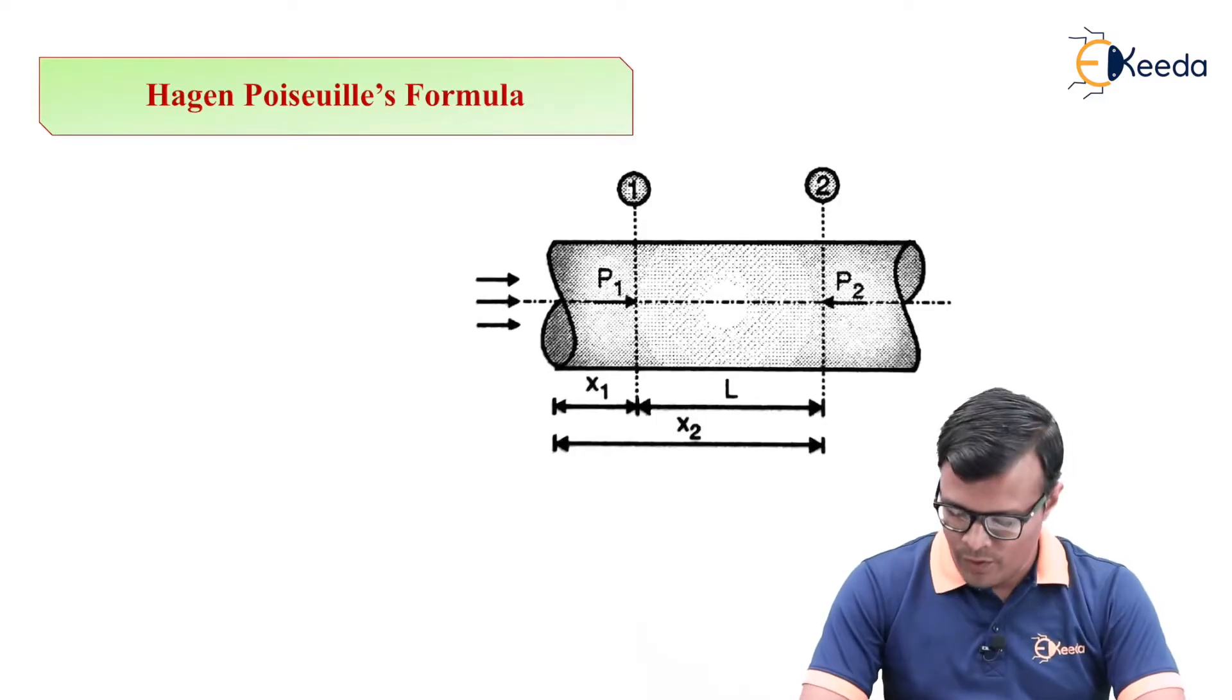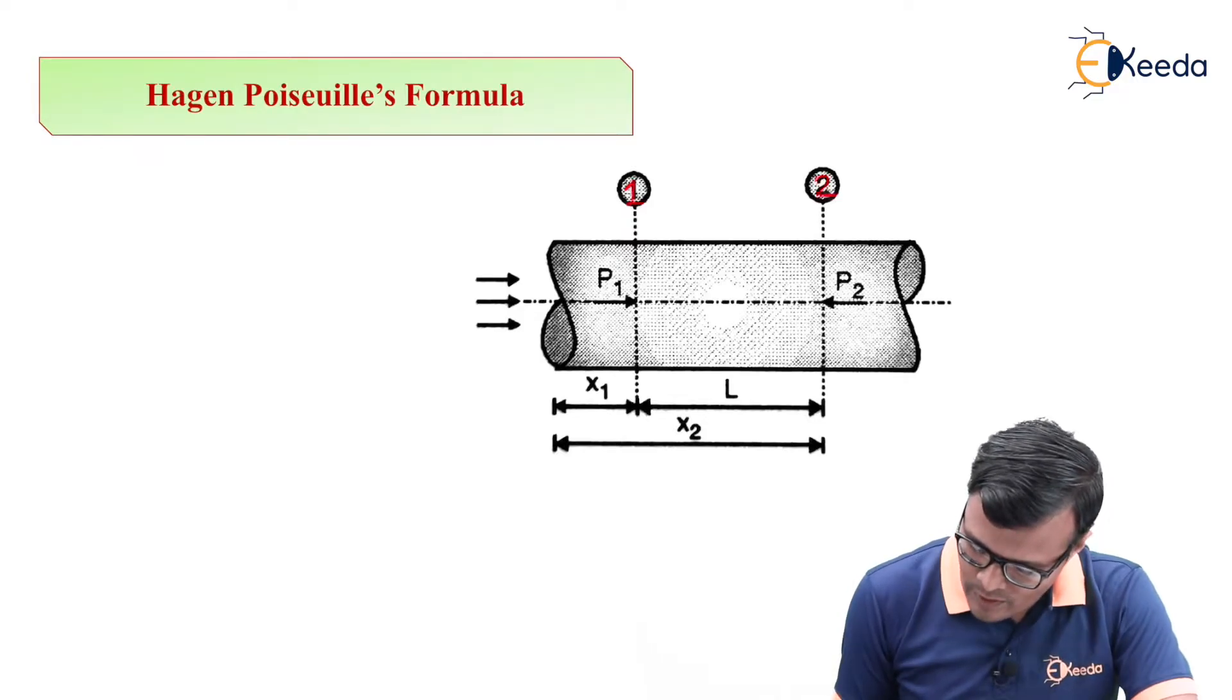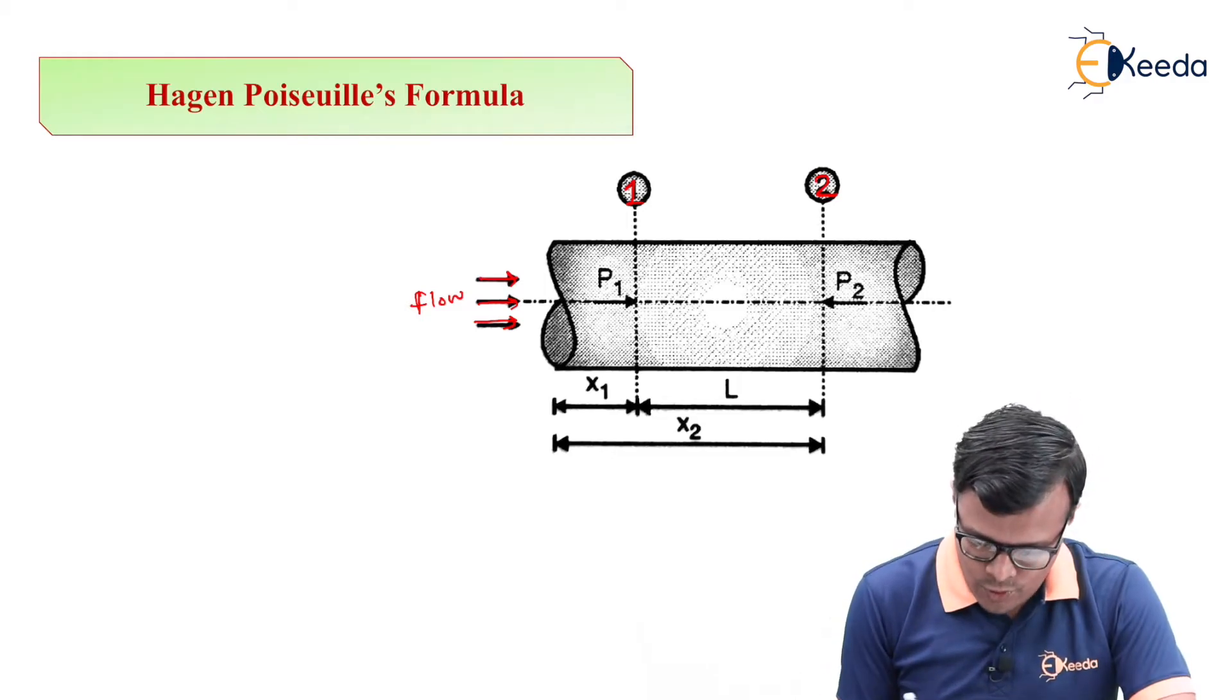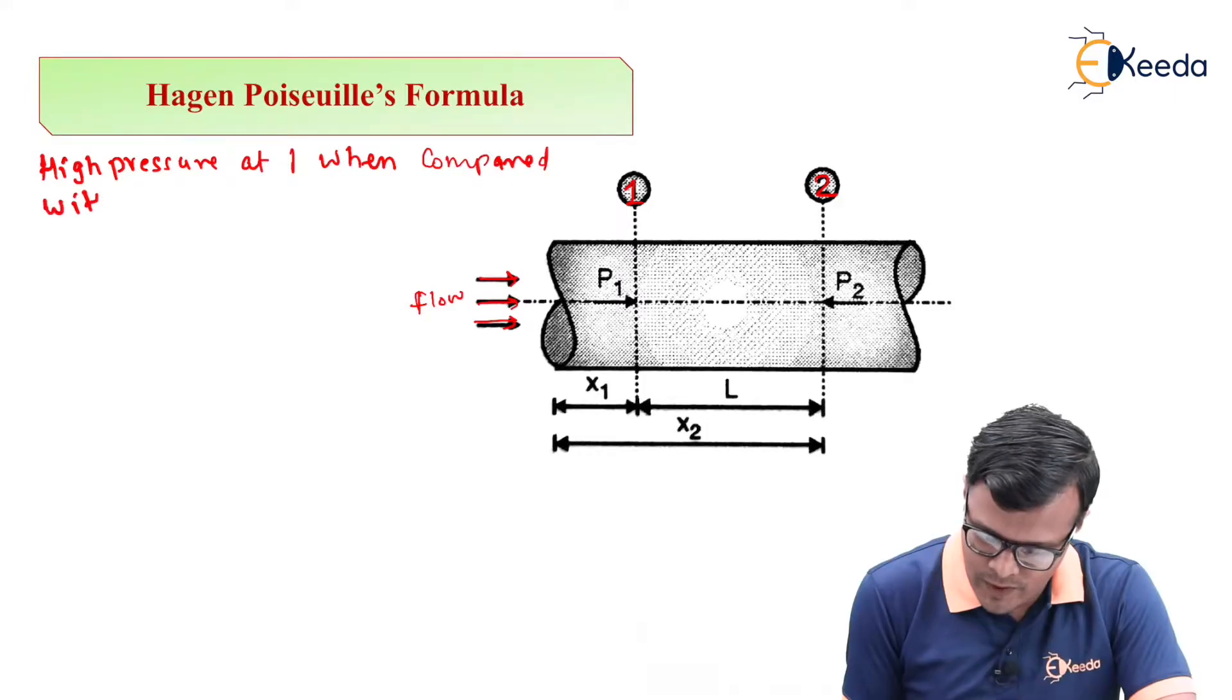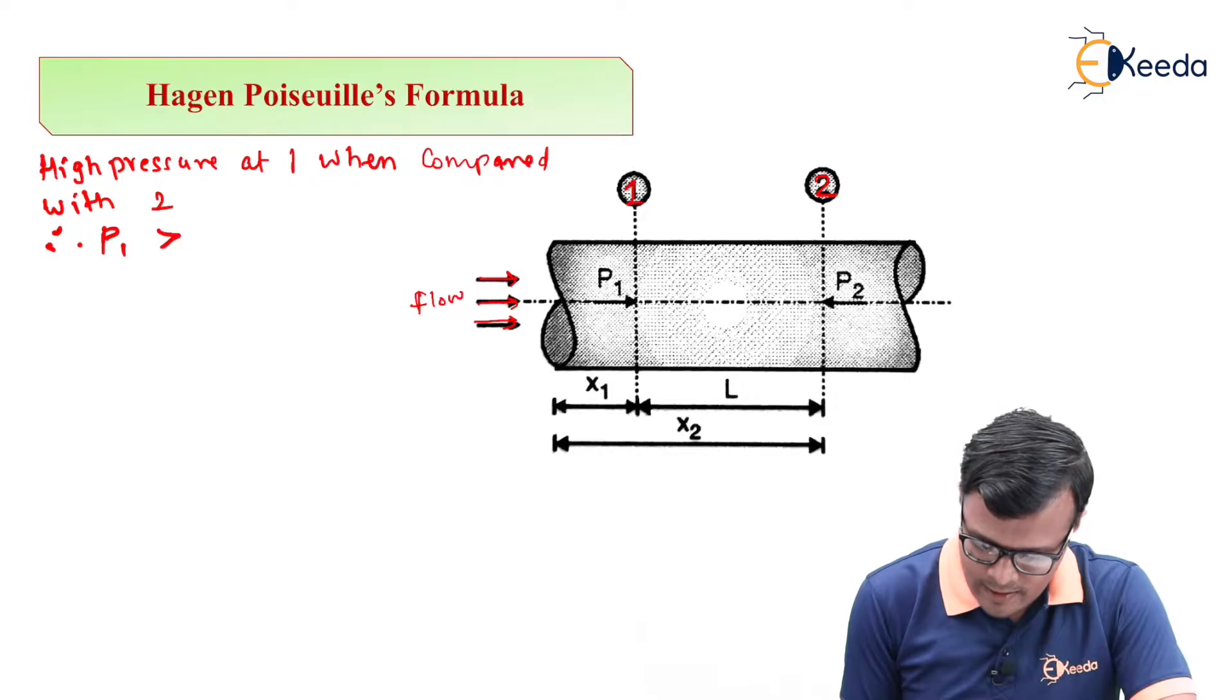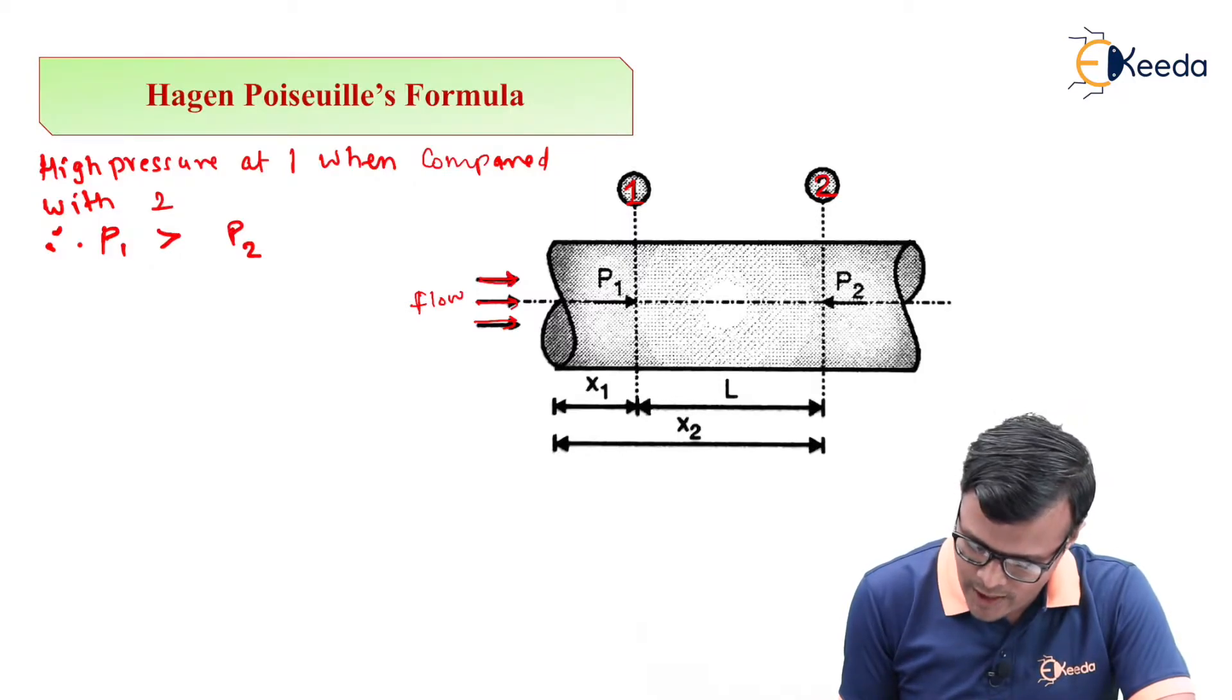For Hagen Poiseuille formula we are going to consider a pipe in which there are two cross sections: this is cross section 1 and this is cross section 2. This is the direction of flow. This flow direction is due to difference in the pressures. So there is high pressure at 1 when compared with point 2, it is clear that this pressure P1 is greater than P2. This is the responsible thing for the flow in this direction as shown in the figure.